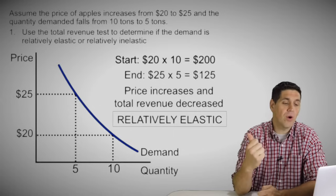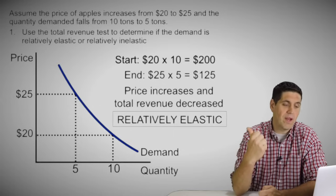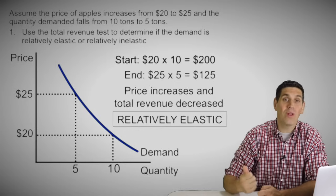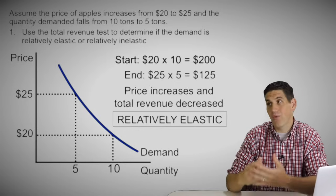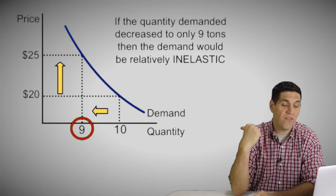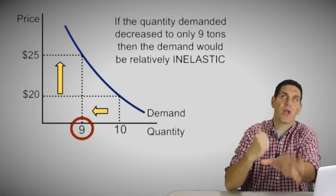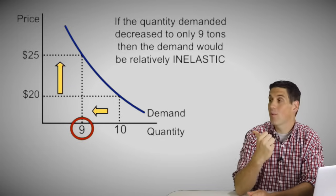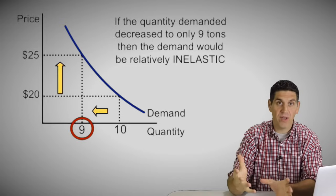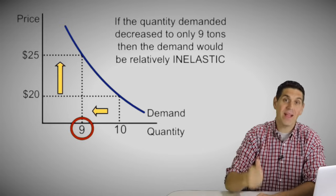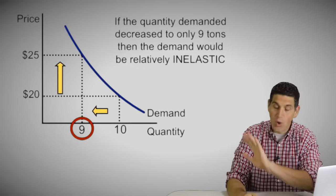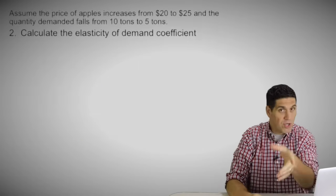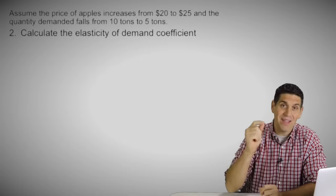The idea here is this: if the price goes up from 20 to 25 and the quantity decreased a whole lot more, the total revenue is going to get smaller — and that's why this is elastic demand. But let's say the quantity only fell to nine — the total revenue would actually go up. Price goes up and total revenue goes up — that would be inelastic demand. Notice: whether it's elastic or inelastic, price goes up and quantity goes down. The total revenue test is not analyzing the quantity — it's asking what happens to total revenue when the price goes up.